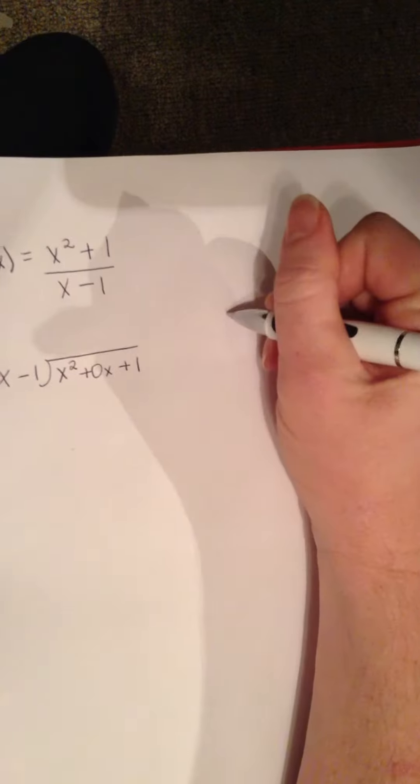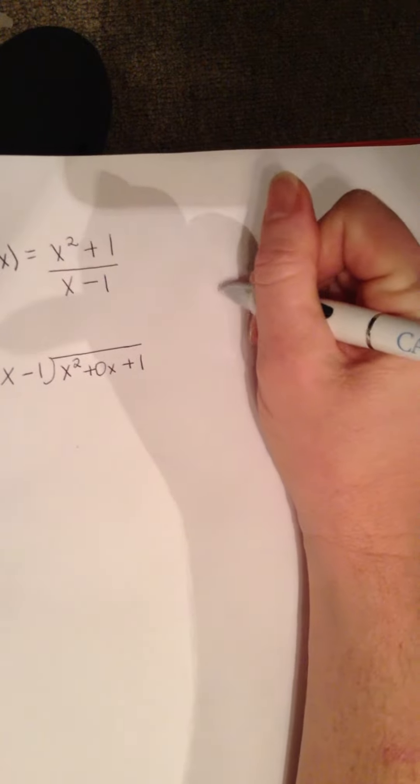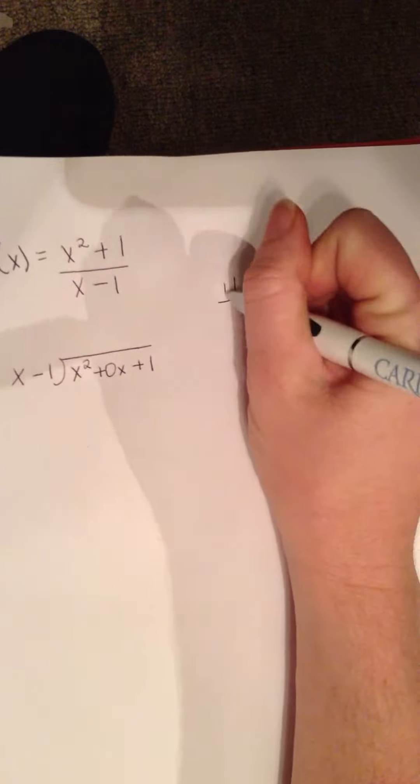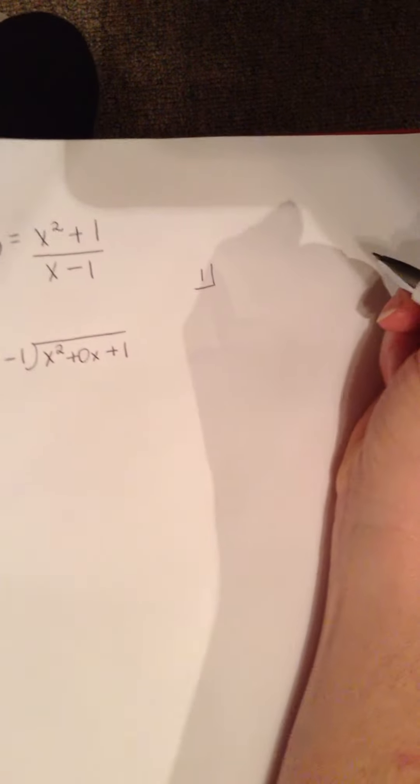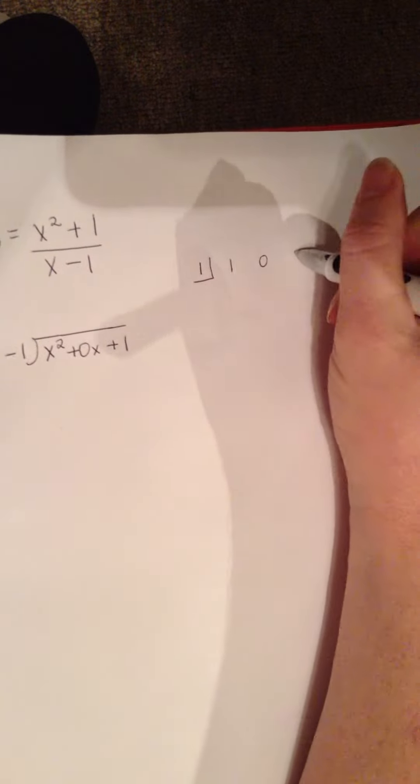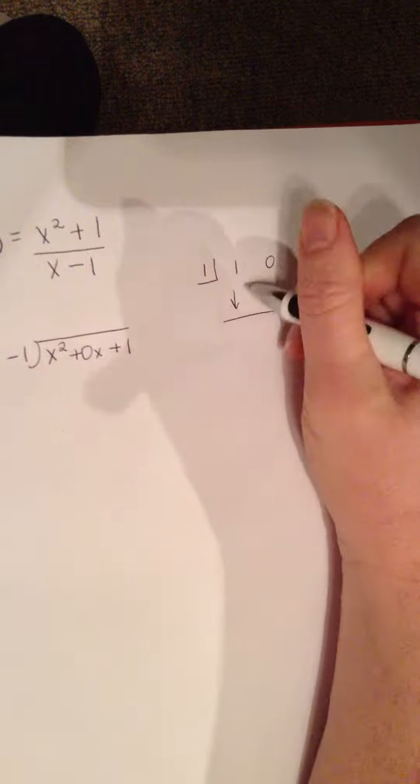I prefer to do synthetic division on this one because synthetic division is quite simple. Remember, we're going to change that from a negative one because we're going to put it as a zero as opposed to a factor. Then I'll put my coefficients across the top, and we'll synthetically divide.